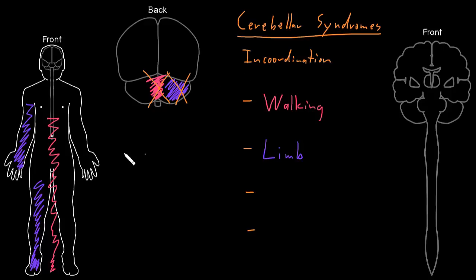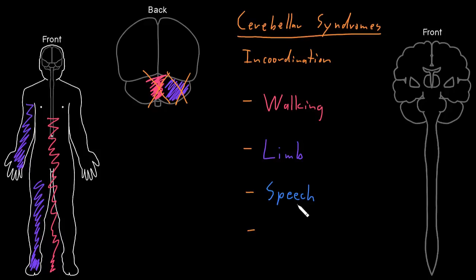Another abnormality we can see with cerebellar dysfunction is in-coordination of the muscles of speech. There are lots of different muscles that have to be finely coordinated to enunciate properly and speak clearly, particularly consonant sounds. With cerebellar dysfunction, there's often in-coordination of these muscles of speech, and enunciation is abnormal — often it's slurred speech. The person is trying to say the proper words, but it comes out slurred and hard to understand. Lots of different parts of the cerebellum are involved in coordinating those muscles involved in speech.